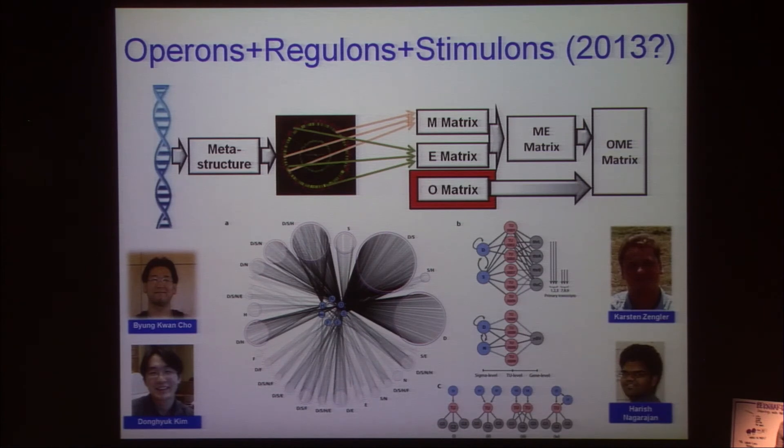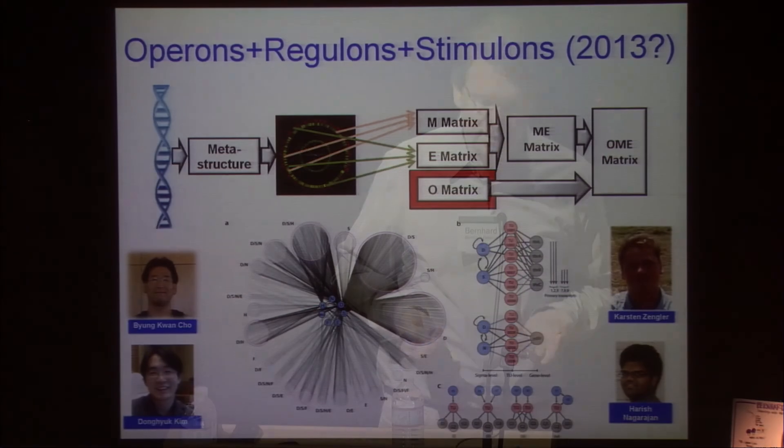There is now enough data available to build the full transcription unit architecture of bacterial genomes. This map is not yet published, but there are about 4,000 independently addressable elements on the E. coli genome.